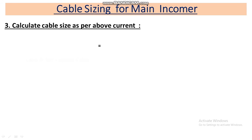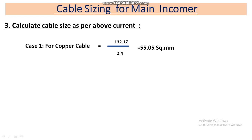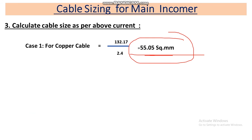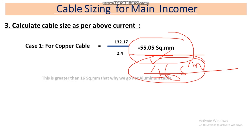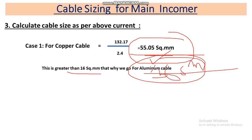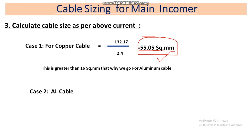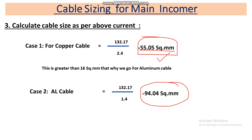Now in Step 3, first we check for copper cable. One square mm copper cable carries 2.4 A, so: 132.17 ÷ 2.4 = 55.05 square mm. Since this is more than 16 square mm, we go for aluminum cable. For aluminum, one square mm carries 1.4 A, so: 132.17 ÷ 1.4 = 94.04 square mm. This is the aluminum cable size.